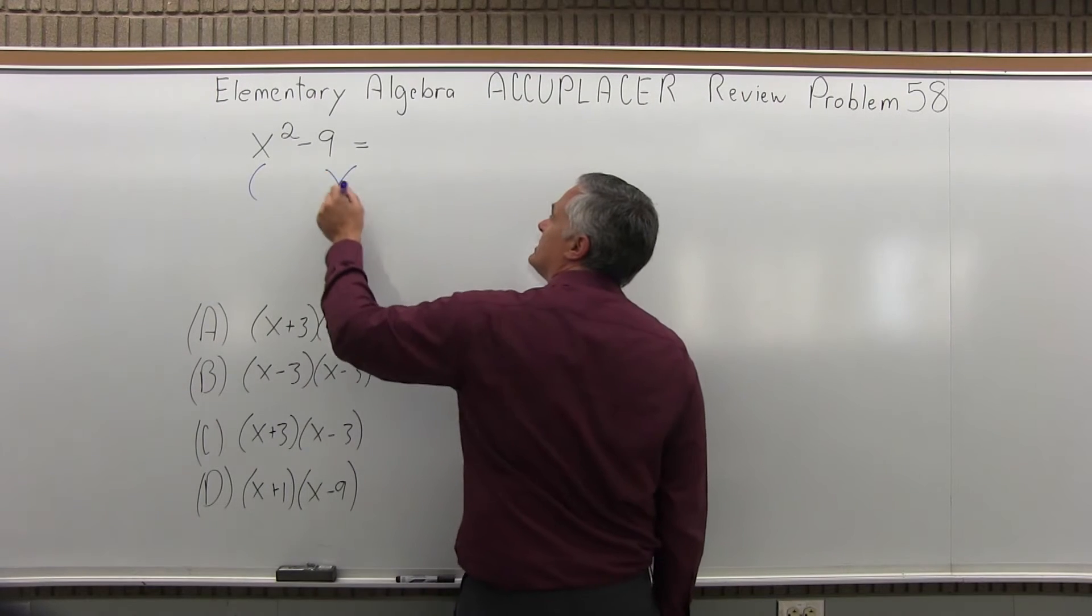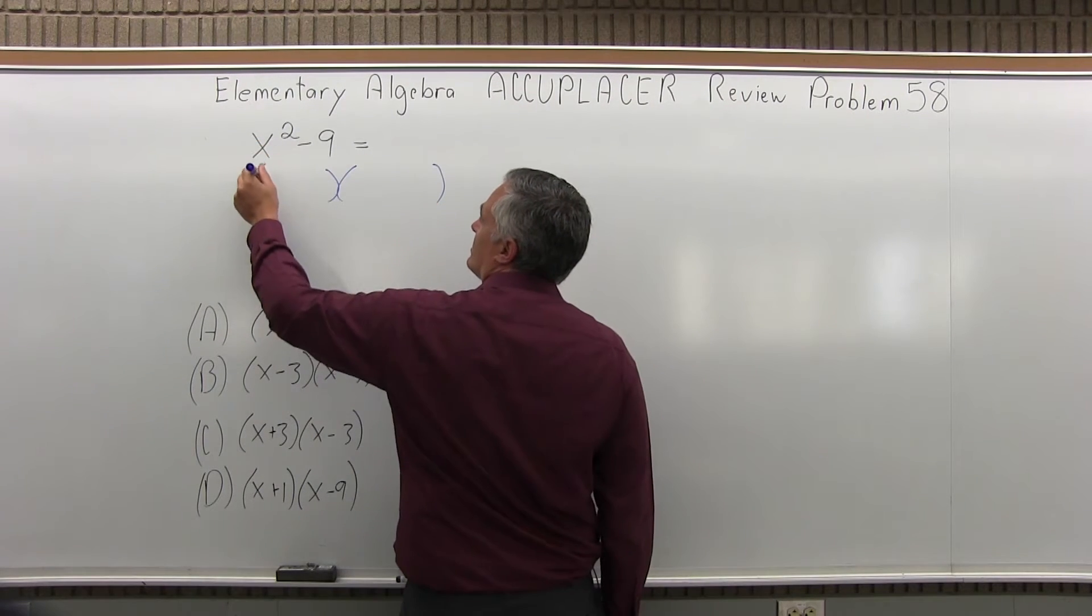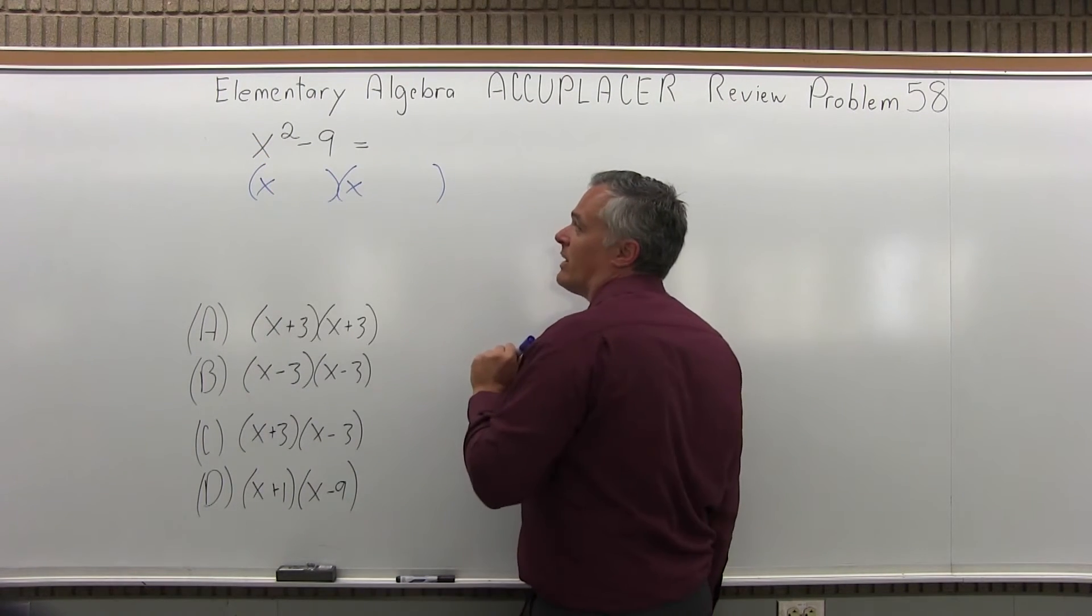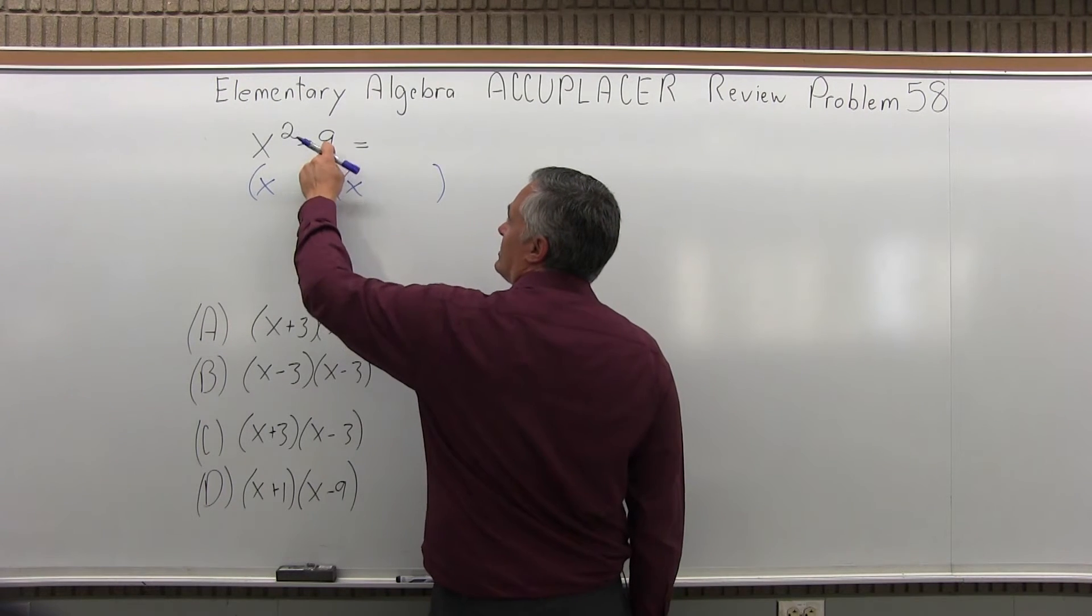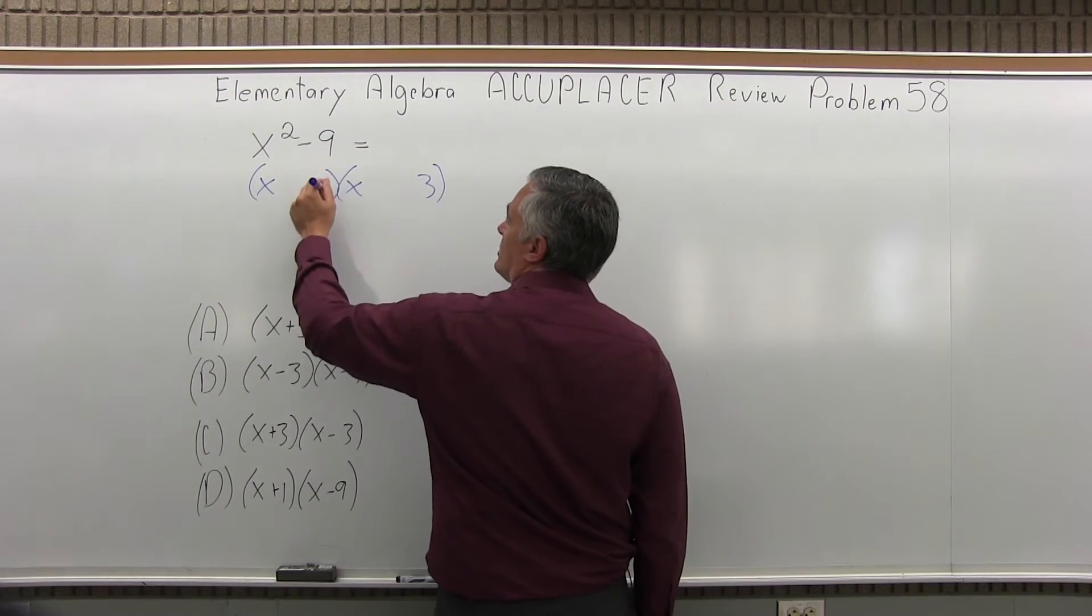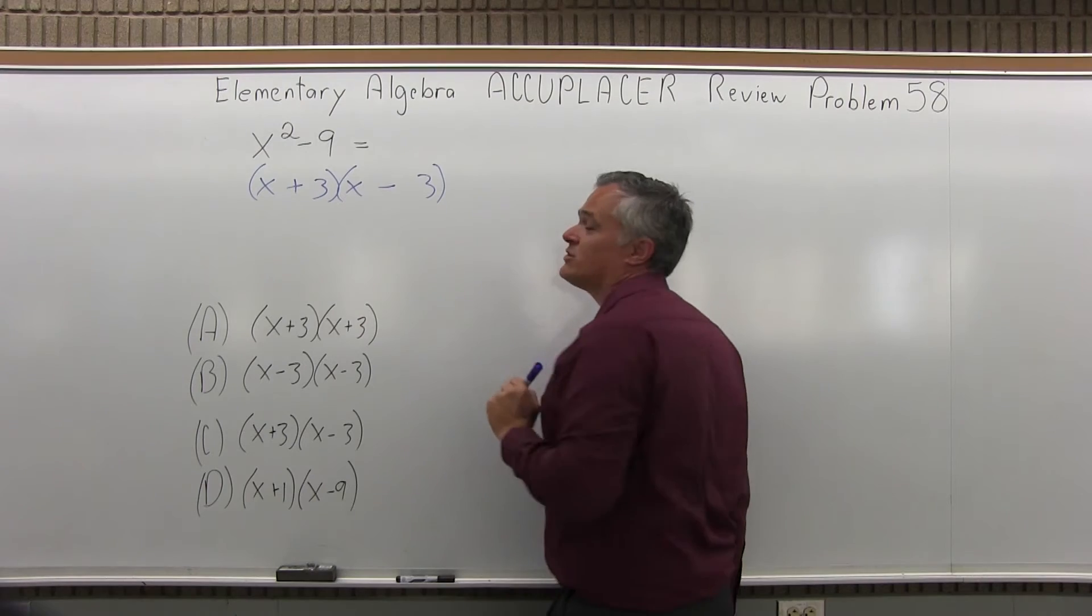So they're looking for two sets of parentheses, and you put the square root of the first thing, so I'm going to go x, x, and then the square root of the second thing, I do 3, 3, and one gets a plus, one gets a minus.